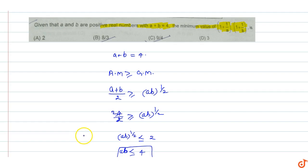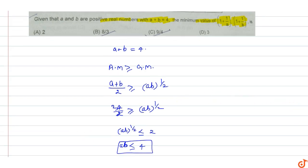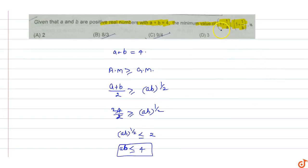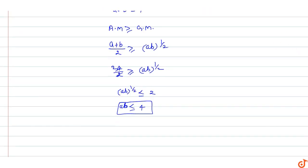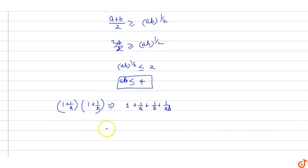So with ab's maximum value of 4, now we find the minimum value of (1 + 1/a) times (1 + 1/b). Expanding: (1 + 1/a)(1 + 1/b) equals 1 plus 1/b plus 1/a plus 1/(ab).